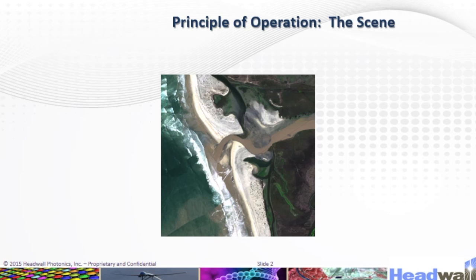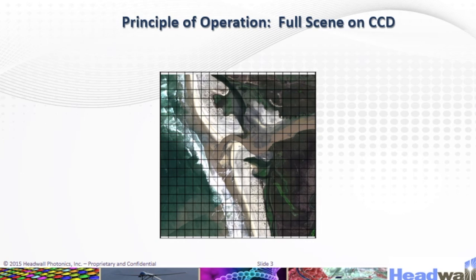Here we have the scene. Let's imagine that you are flying over this nasty shoreline where dry riverbed meets the sea. By looking at it, I have no idea what this is actually. If you just took a picture with a regular CCD camera, each pixel would be one square in the grid.